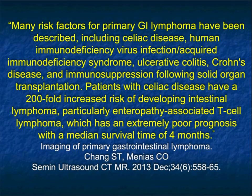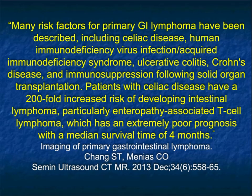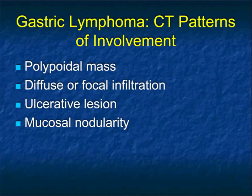There are many risk factors for primary GI lymphoma, including celiac disease, HIV, ulcerative colitis, Crohn's, and immunosuppression. Patients with celiac disease have a 200-fold increased risk of developing intestinal lymphoma. Although it's not quite the same numbers for gastric cancer, there is of course an increased risk.